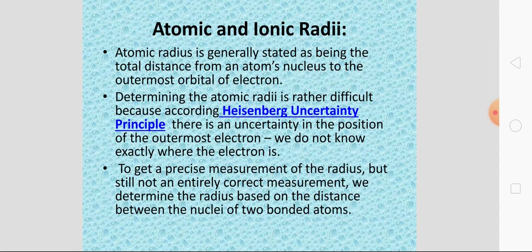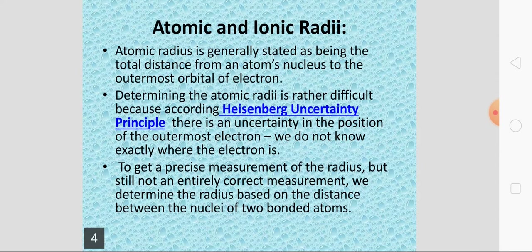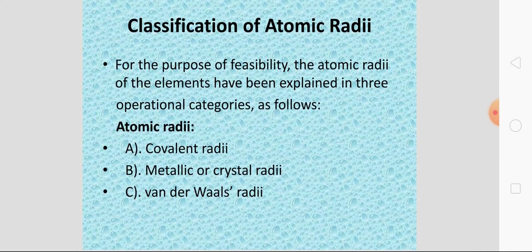Atomic radius kya hoti hai? Atomic radius, hum ye bol sakte hain, ki atom me nucleus hota hai, nucleus se jo outermost orbital hai, us mein jo electron hai, uske beech ki jo distance hai, that is called atomic radius. Par aap ye jante hain ki hum is tarah se atomic radius ko calculate nahi kar sakte, ek single atom ka kooi existence nahi hota. According to Heisenberg's uncertainty principle, is tarah se aap atomic radius nikal sakte hain.